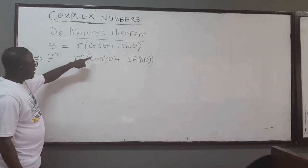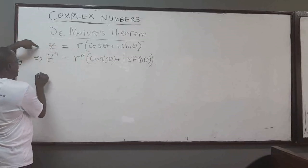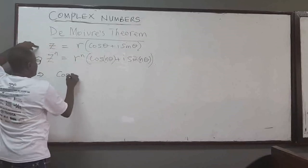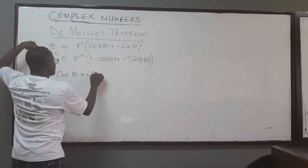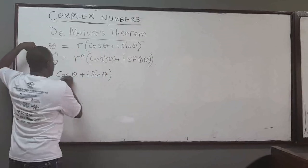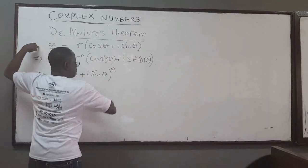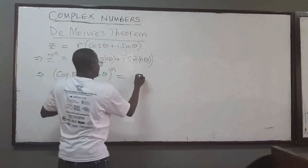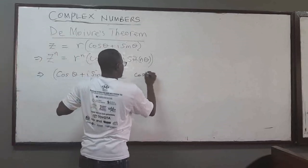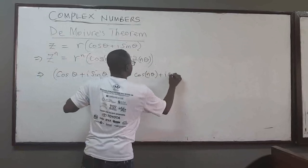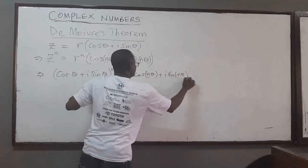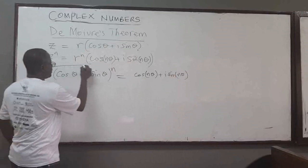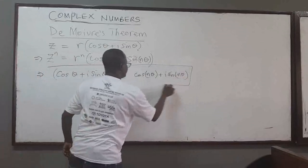This also means that if I have (cos θ + i·sin θ) all raised to the power n, that has to be equal to cos(nθ) plus i·sin(nθ). So this is also a statement of De Moivre's theorem.